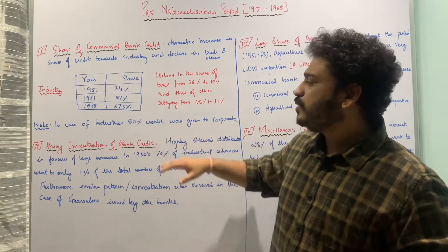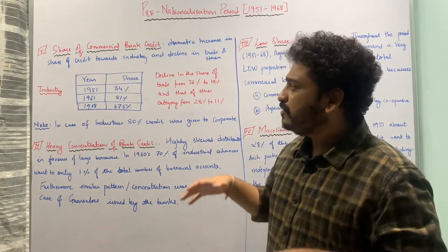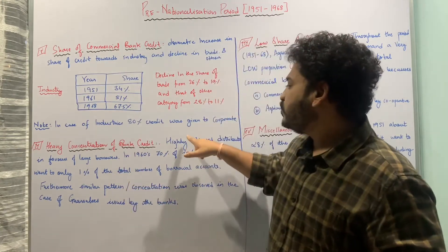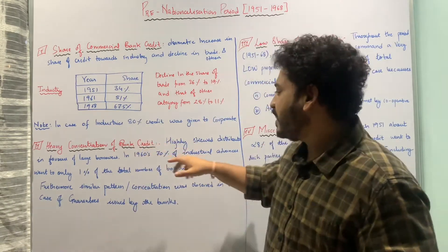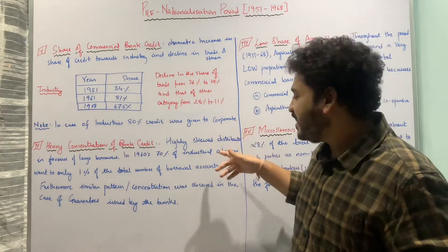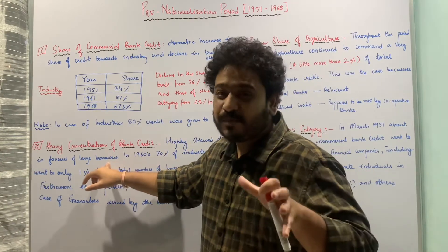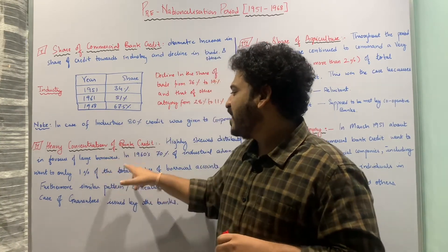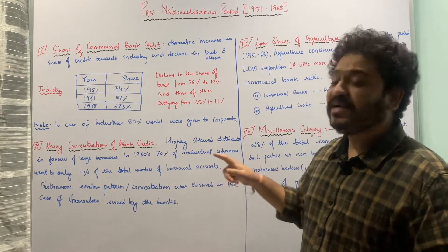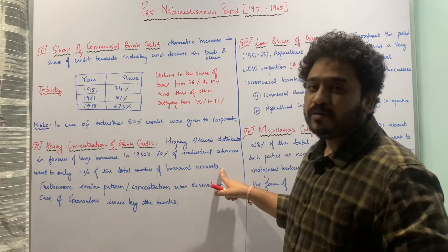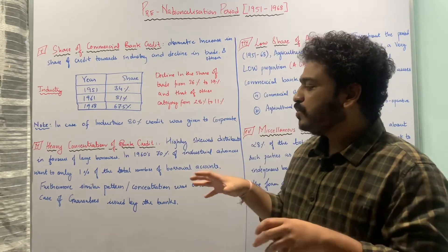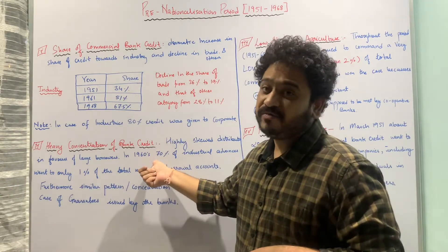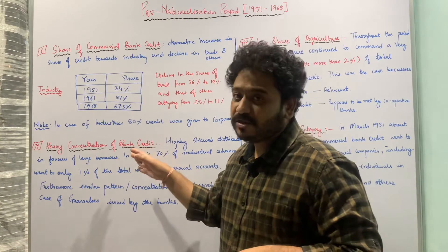The second feature of this period is heavy concentration of bank credit. Commercial bank credit showed a highly skewed distribution in favor of large borrowers. In the 1960s, 70% of industrial advances went to only 1% of the total number of borrowable accounts. So just 1% of borrowable accounts received around 70% of the credit disseminated by the commercial banking sector.